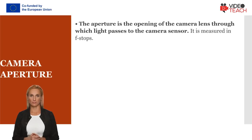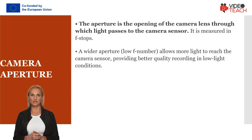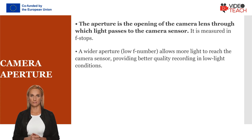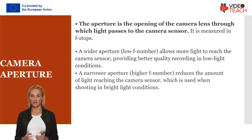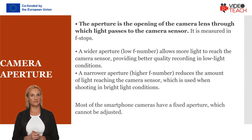The aperture is the opening of the camera lens through which light passes to the camera sensor. It is measured in f-stops. A wider aperture (low f-number) allows more light to reach the camera sensor, providing better quality recording in low-light conditions, but may result in a shallower depth of field, blurring the background. A narrower aperture (higher f-number) reduces the amount of light, used when shooting in bright light conditions, and increases the depth of field so more of the scene will be in focus. Most smartphone cameras have a fixed aperture which cannot be adjusted.